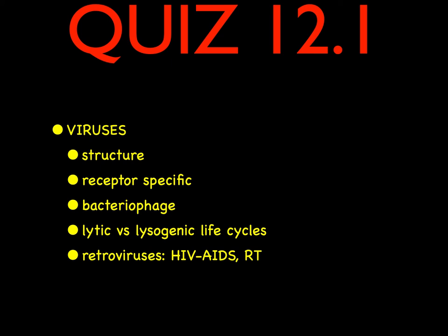That's it for our presentation. We expect you to know viruses: the structure, that they are receptor-specific, something about bacteriophages, the difference between lytic and lysogenic life cycles, and be able to tell me a little bit about retroviruses — HIV causing AIDS, and that they have that unique molecule called reverse transcriptase. I hope you learned something, and we will see you next time.